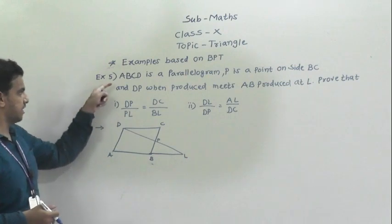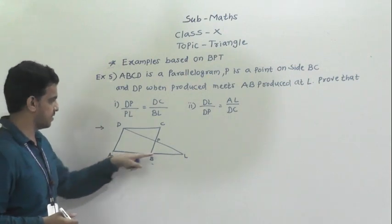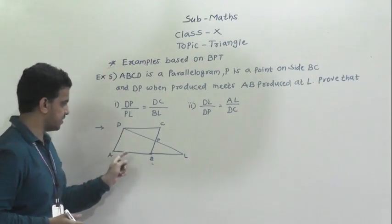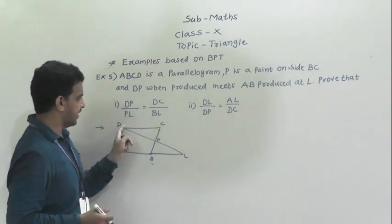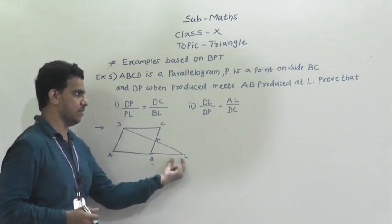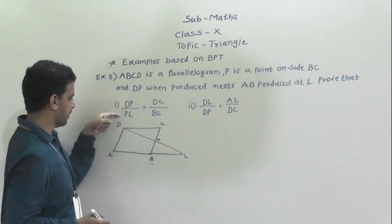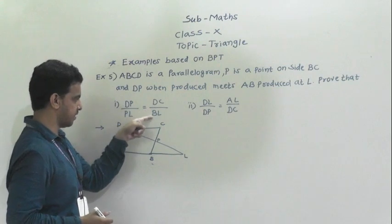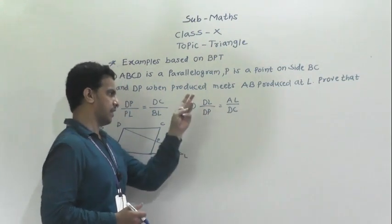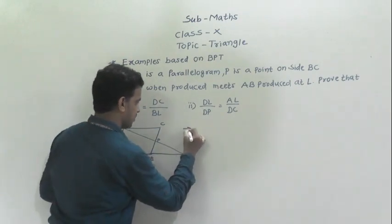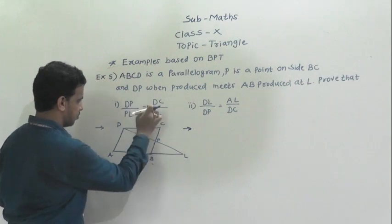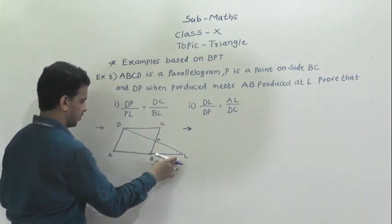Example 5: ABCD is a parallelogram. P is a point on side BC, and DP when produced meets AB produced at L. We have to prove: first, DP by PL is equal to DC by BL; and second, DL by DP is equal to AL by DC.